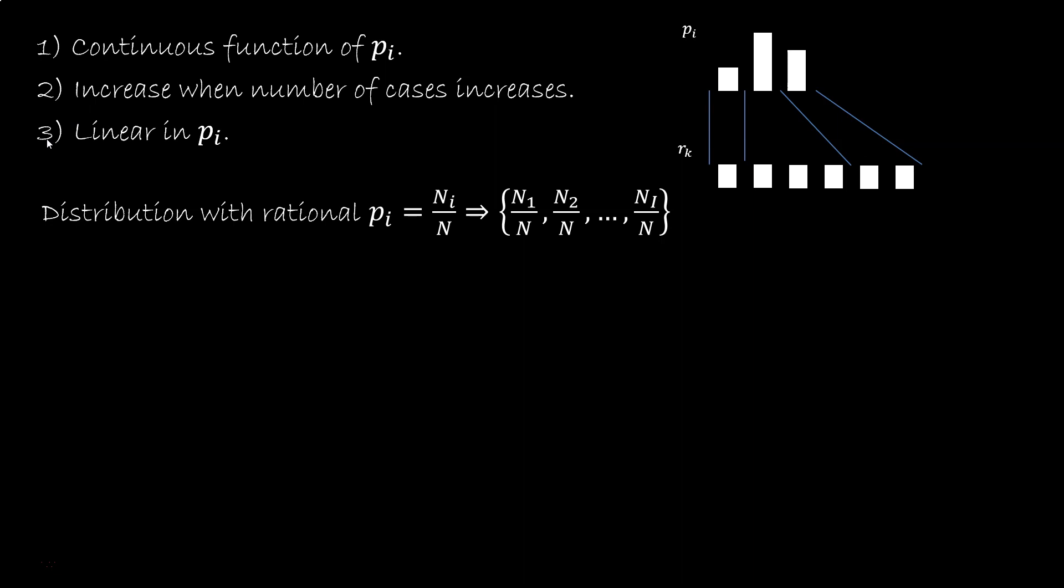Again we can use the third property and write that the variability of the final distribution, which is a uniform distribution over n cases, is equal to the variability of the original distribution, plus, for each case, the probability of that case times the variability of the distribution we used to expand, which is a uniform distribution over ni cases. Since we know the variability over uniform distributions, we have k log n equal variability of the original distribution plus the sum of Pi k log ni.